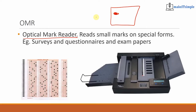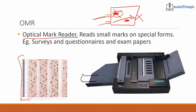The optical mark reader's job is to look for whether light can pass through. If you shade an area and the light that's supposed to pass through can't, that means the answer is marked. If the light is able to pass through, that answer is blank. The paper lines up in the scanner and it tells you — for example — this person got 20 out of 30.